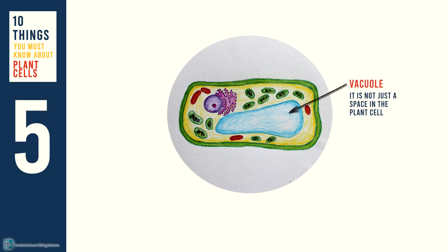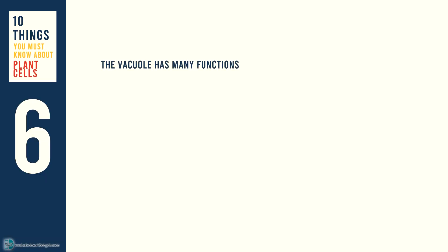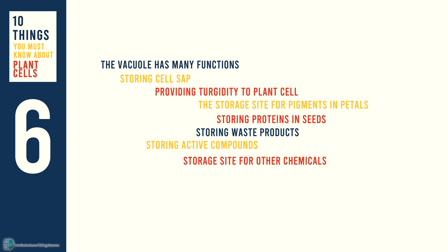The vacuole is not just a space in the plant cell — it is a membrane-bound organelle. The membrane is known as the tonoplast. Apart from storing cell sap and providing turgidity to the plant cell, the vacuole also has some other functions. For example, as the storage site for pigments in petals, proteins in seeds, waste products, active compounds, and other chemicals.